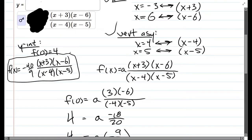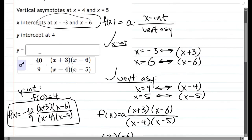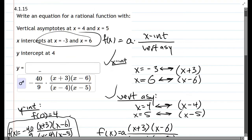We look here. We see our x-intercepts in the numerator, x plus 3, x minus 6. Denominator vertical asymptotes, x minus 4, x minus 5. And here we go. Our leading coefficient is negative 40 ninths. So that is how you can reconstruct this function based on vertical asymptotes, x-intercepts, and the y-intercept.